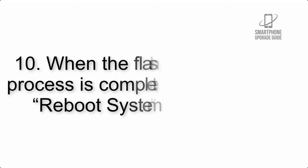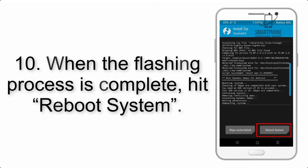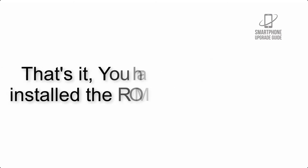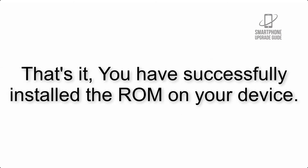Step 9: After Gapps flashing completes, select Wipe Cache and Dalvik from the bottom left side of the screen and swipe to wipe. Step 10: When the flashing process is complete, hit Reboot System. That's it — you have successfully installed the ROM on your device.